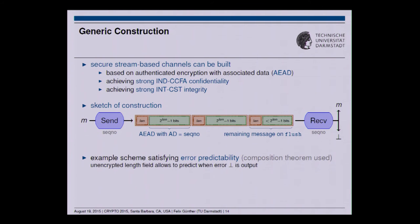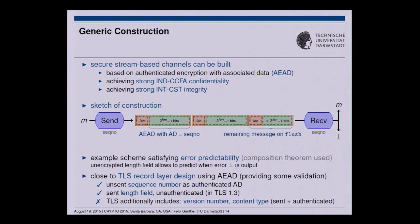Interestingly, this construction is the natural way to build a stateful channel from a stateless AEAD scheme, and it is actually pretty close to what TLS does in the record layer design when using an AEAD scheme. TLS also has an unsent sequence number authenticated as the associated data field, and a length field which is sent but not authenticated — at least in the latest TLS 1.3 draft versions.